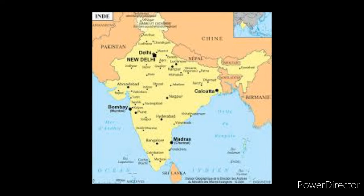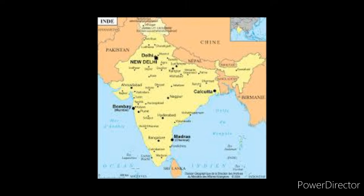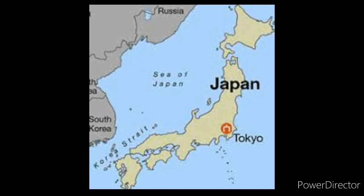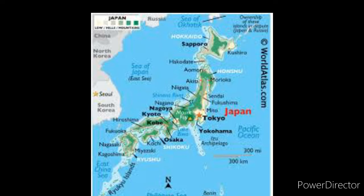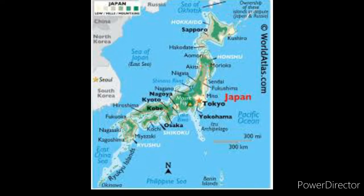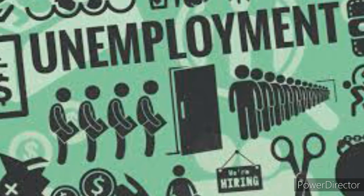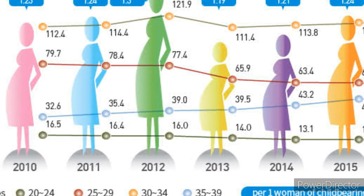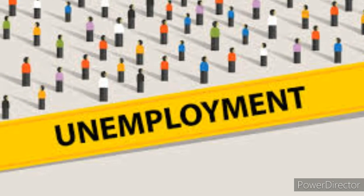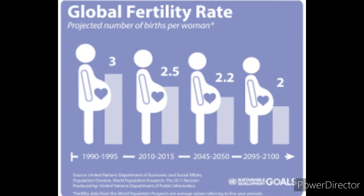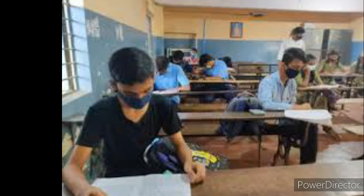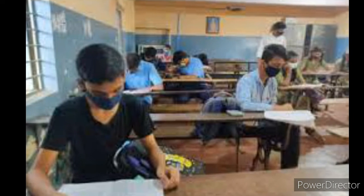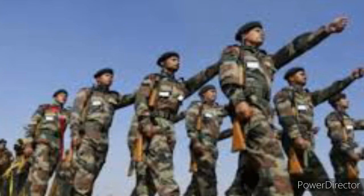India GDP per capita is 8,484 US dollars. Japan's GDP is 4.97 trillion US dollars, GDP growth rate is 1.7%, GDP per capita is 45,565 US dollars. India unemployment rate is 8.5% and fertility rate is 2.4%. Japan unemployment rate is 2.9% and fertility rate is 1.42%.